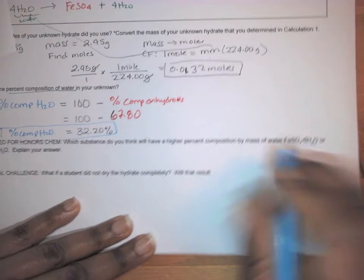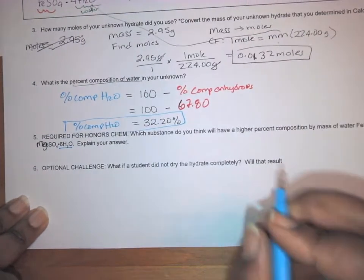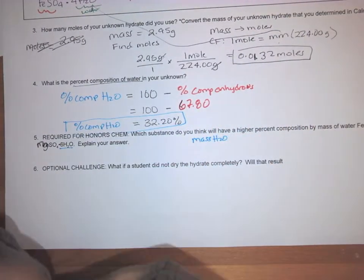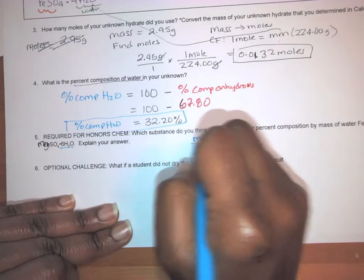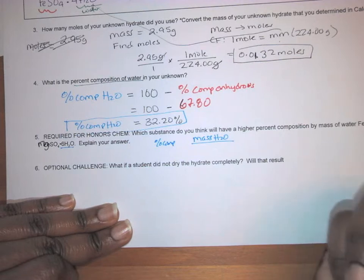Now the mass of H2O is that different in these molecules. Let's take a look. So this one has six H2Os and this one has six H2O. So is the mass going to be different? No. So the mass of the H2O is going to be the same. The part that's going to be different, however, will be the mass of the hydrate.